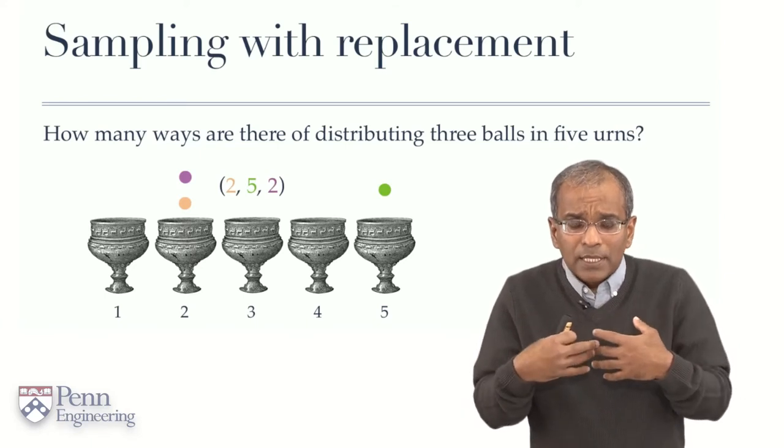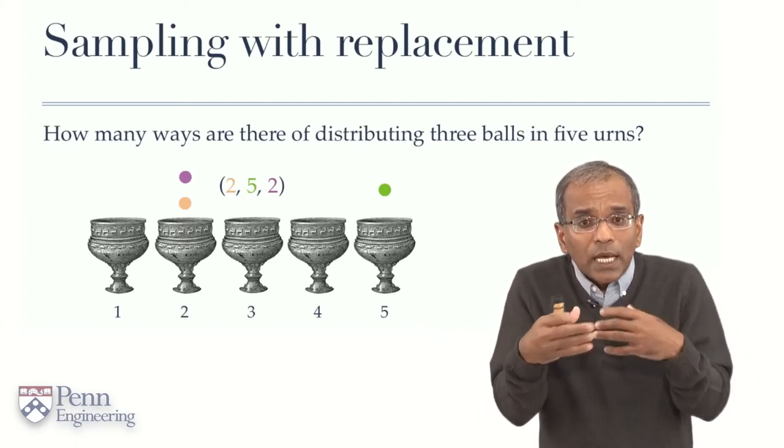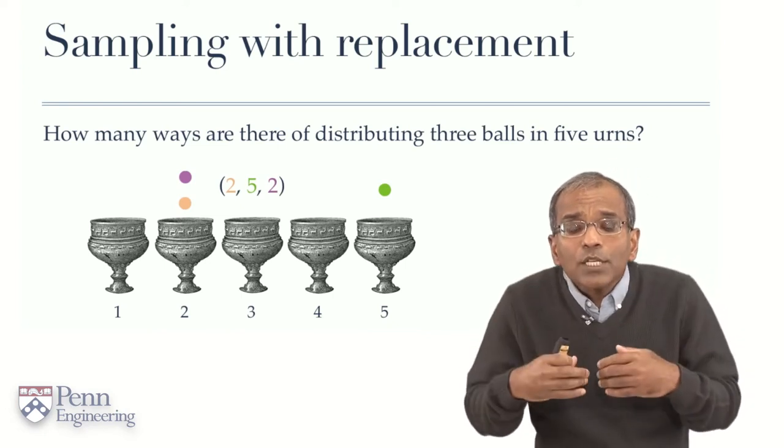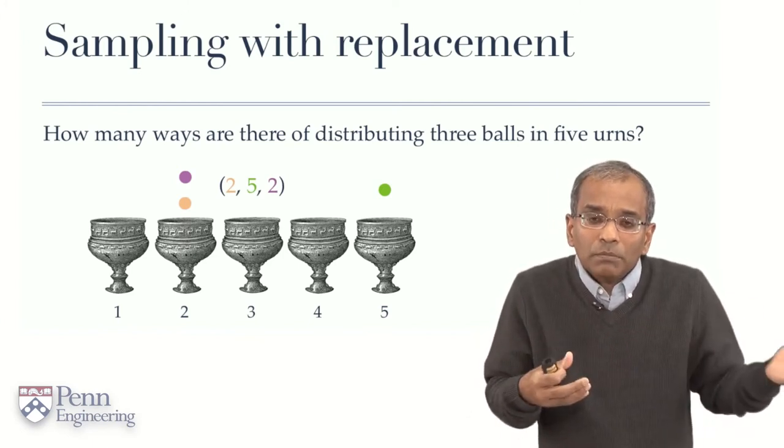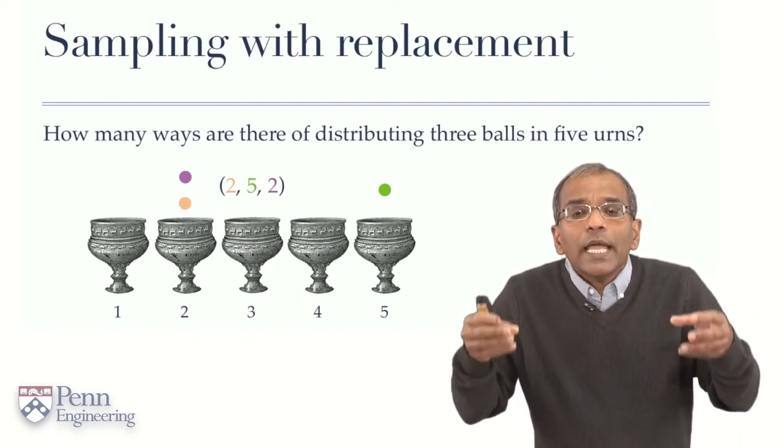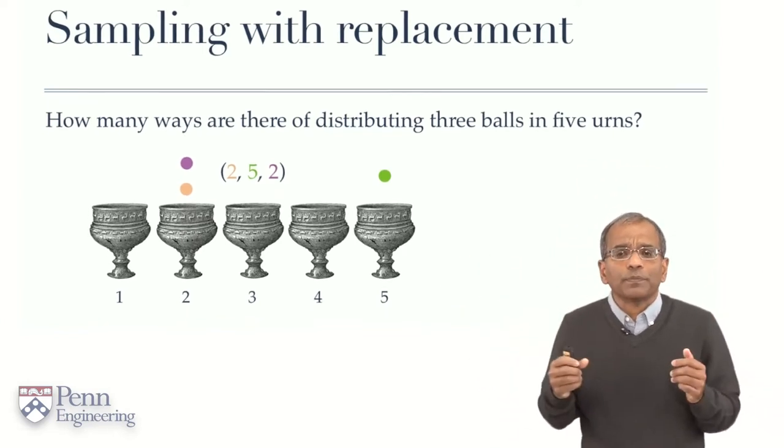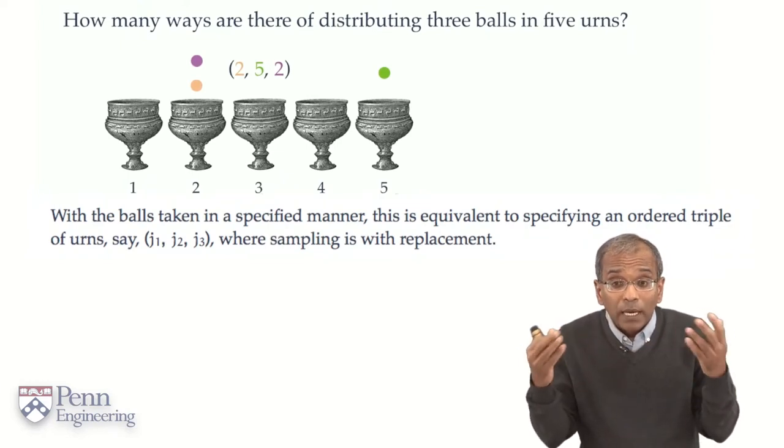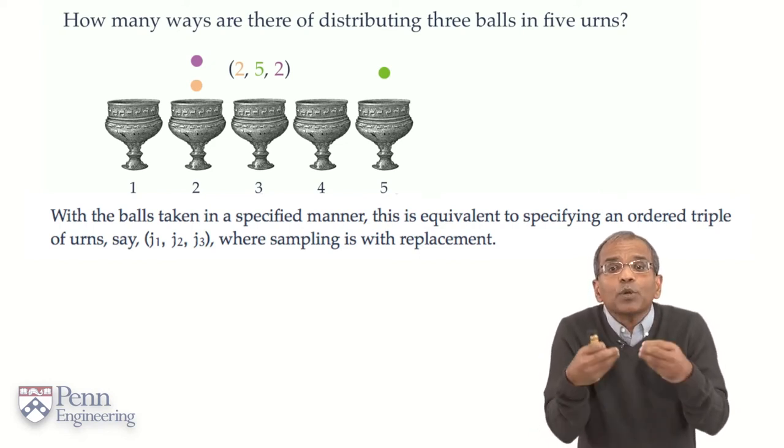Now let's step back and abstract this and try to understand how this would work in general. The idea now is I've abstracted the urn and ball metaphor and said, here's what we do. Let's decide on an a priori order for the balls. In our case: peach, green, purple. And then simply specify a triple of numbers in order representing which urns these balls landed up in. Here is an abstraction. The balls are specified in a particular order. Remember, the balls are distinguishable by color, by number, or otherwise. And where they have landed up gives me a triple of numbers.